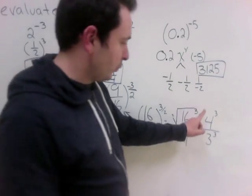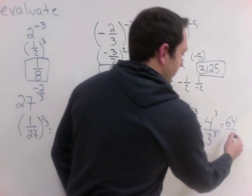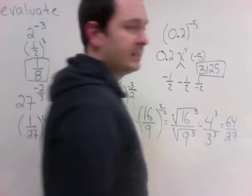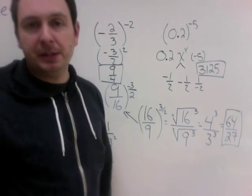Now, 4 times 4 times 4 is 64. 3 times 3 times 3 is 27. There is my completed answer.